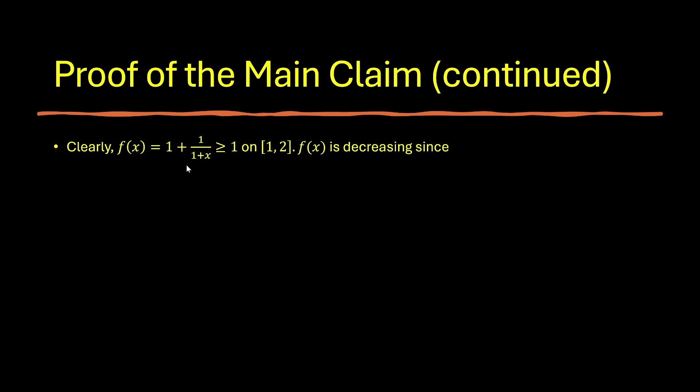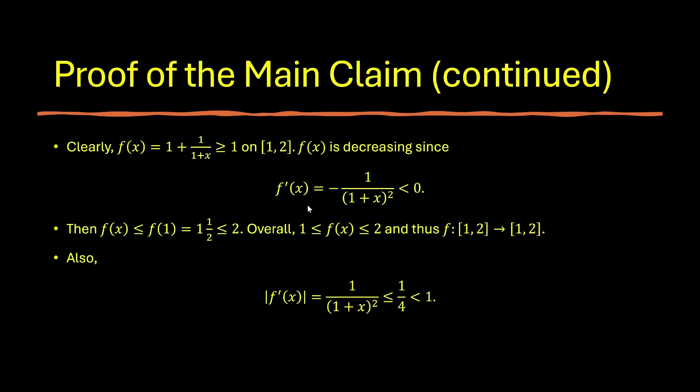f is decreasing because we can compute its derivative and see is negative. f prime of x equals to minus 1 over 1 plus x squared, which is negative. Then f of x is less than or equal to f of 1. And f of 1 is 1 and 1 half. This is less than or equal to 2. So overall, f of x is between 1 and 2. And as a result, f maps from 1, 2 to itself. So the first objective is now accomplished. f maps from 1, 2 to itself. And also, we can take the absolute value of the derivative and see it is always less than 1. So therefore, by the proposition, f of x is a contraction on the interval 1 to 2 as needed.